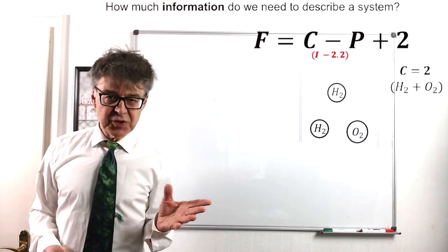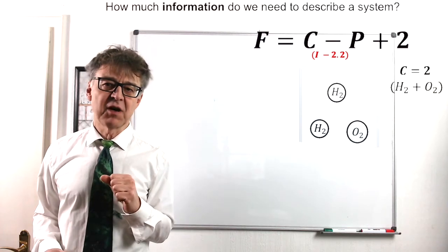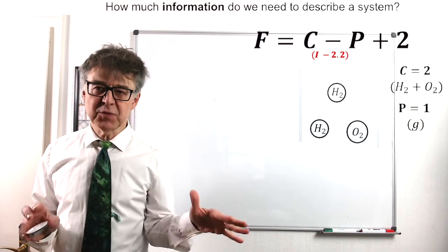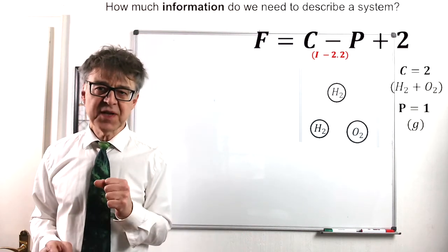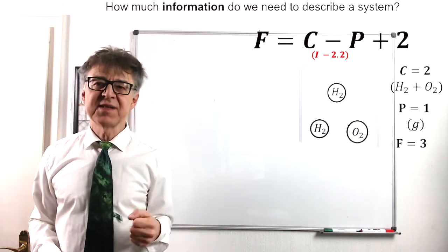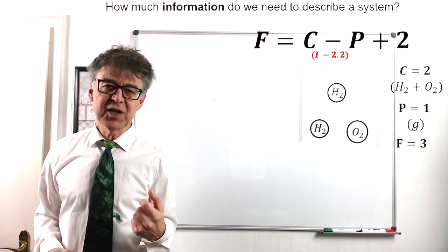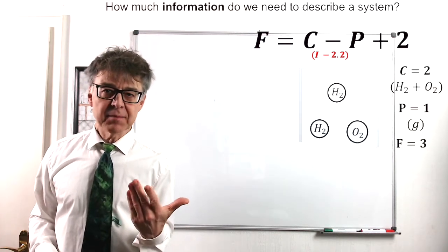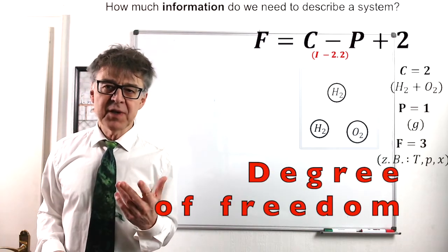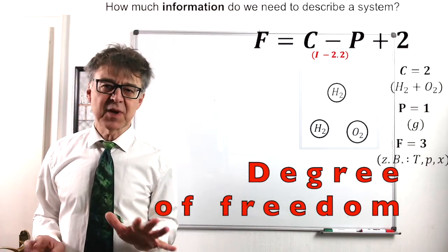In oxyhydrogen gas, there are two components, hydrogen and oxygen. Two different types of particles. There is just one phase, one homogeneous region, the gaseous phase. We do the math, F equals 3. It needs three state variables to clearly describe the system. No less and no more. We can choose them freely. That's why F is called degree of freedom. For example, specification of temperature, pressure, composition does completely describe the system.